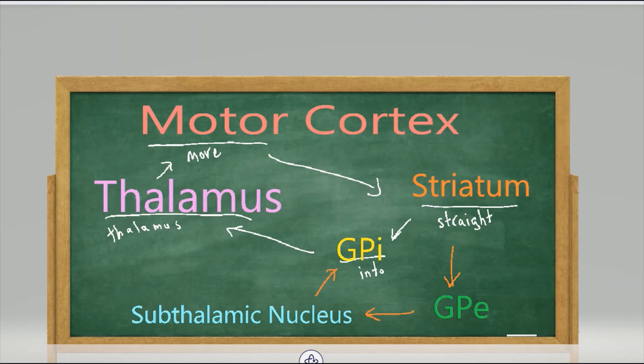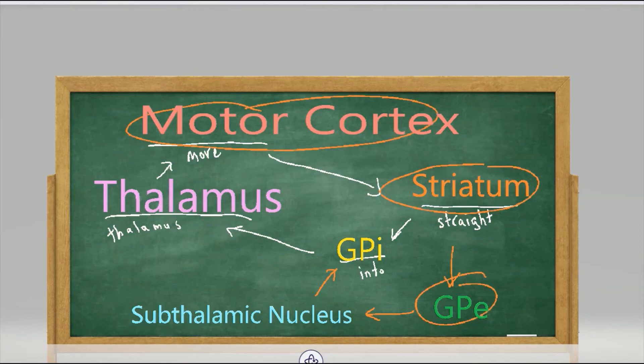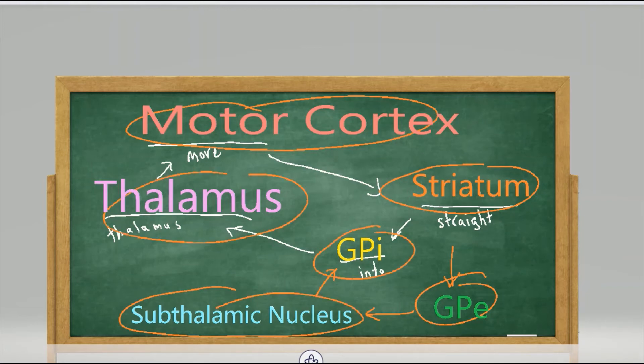Then it continues the regular path. So it goes from the motor cortex, to the striatum, to the externus, to the subthalamic nucleus, to the internus, to the thalamus, back to the motor cortex.